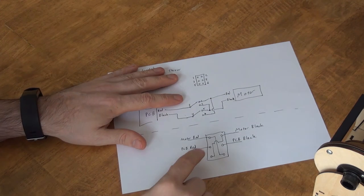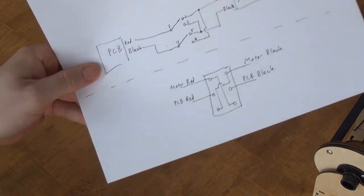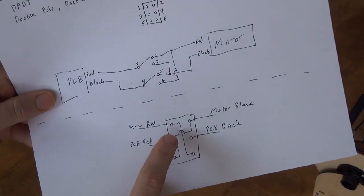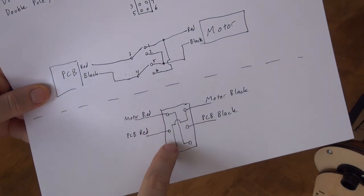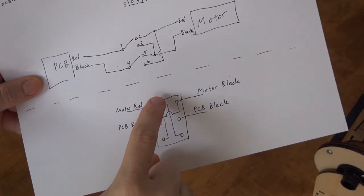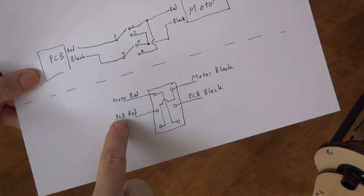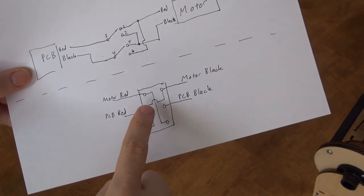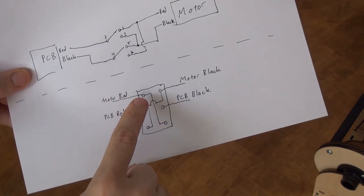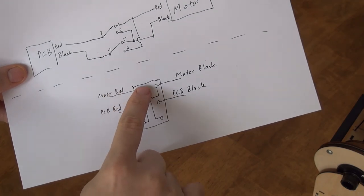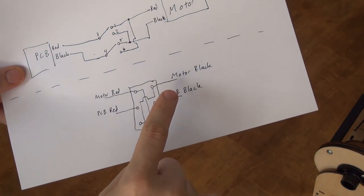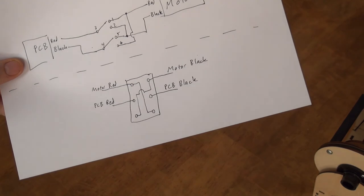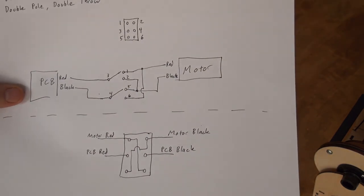And then this bottom diagram basically just shows what it actually looks like at the switch. So when you get one of these switches they're going to have two columns and three rows of terminals, and you'll want to connect a red wire and a black wire from the circuit board to these middle two. And then you'll want to connect the motor red wire to one of the top terminals and the motor black wire to one of the top terminals. And then you basically are just connecting wires diagonally to these other terminals, and that's pretty much all you have to do in order to sort of switch the directions.